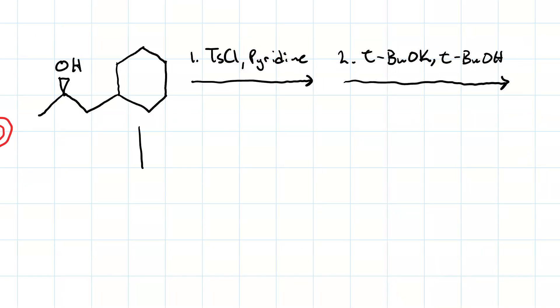So in my first step, the tosyl chloride and pyridine, treating the alcohol, just changes the OH to an OTS. So now what have I got? A secondary tosylate.